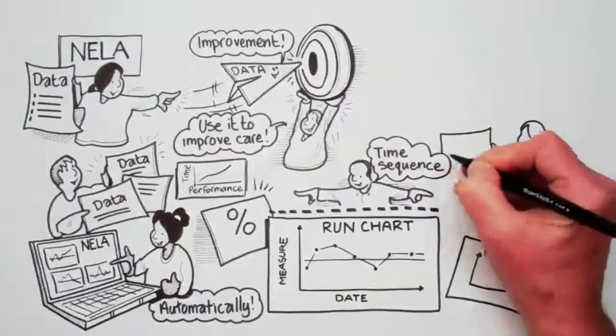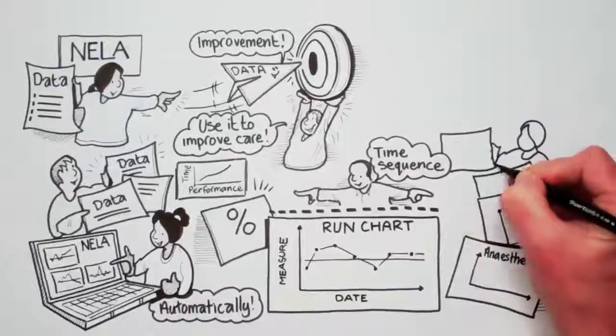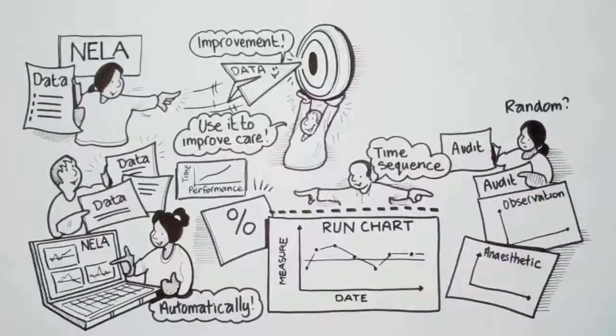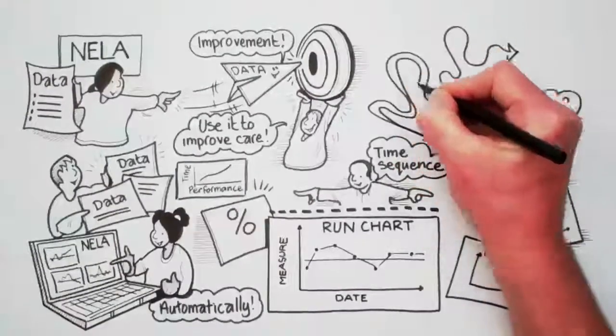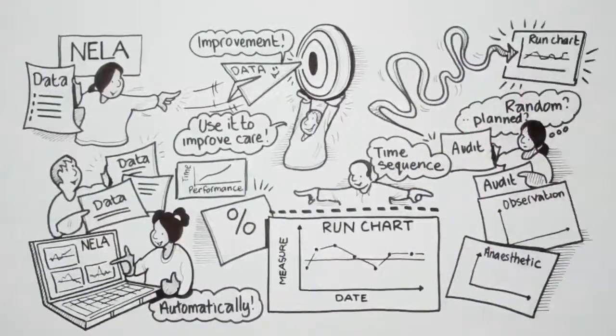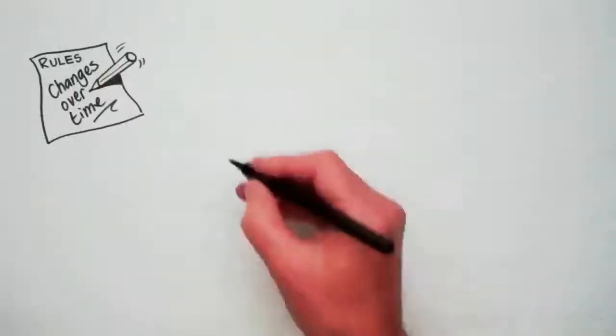Data collected over time is a much more effective way to see if things are improving than an audit compared to another audit six months later. Lots of things, random or planned, can happen in real-world data. It oscillates up and down, so you need a run chart over time to really see the trend of what's going on.